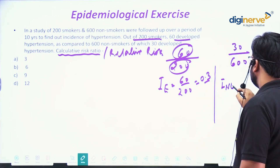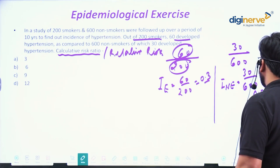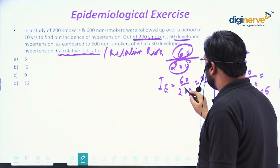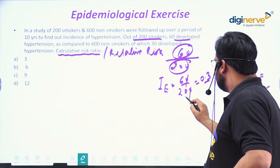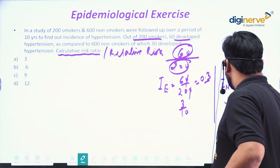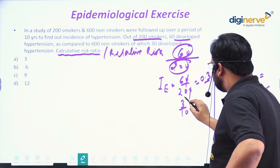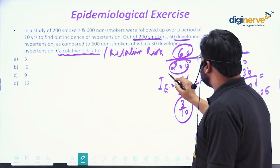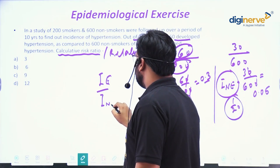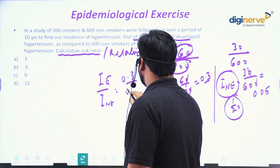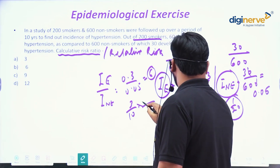Incidence among exposed (IE) = 60/200 = 0.3, which simplifies to 3/10. Incidence among non-exposed (INE) = 30/600 = 0.05, which simplifies to 1/20. For relative risk: IE divided by INE = 0.3 divided by 0.05. That is 3/10 divided by 1/20, which equals 3/10 multiplied by 20, giving us 6. So the risk ratio or relative risk is 6.